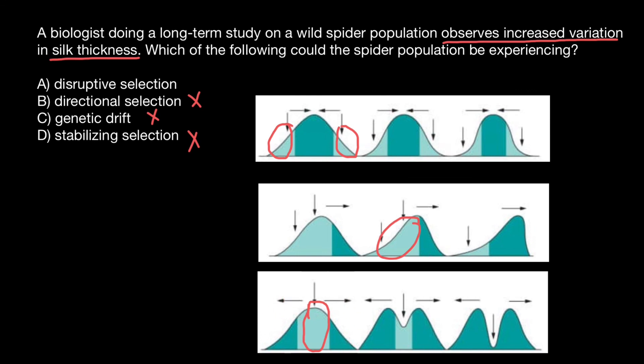Then what we are going to see is that the number or frequency of these extreme phenotypes generation after generation is going to increase. And as a result of disruptive selection, after a certain number of generations, we are going to see increased variation in silk thickness. So take a look. We have now a much broader range of the phenotypes.